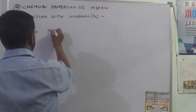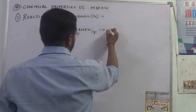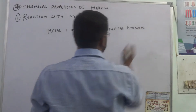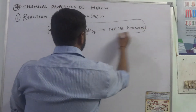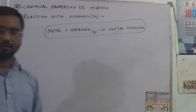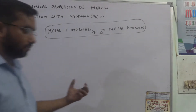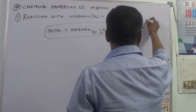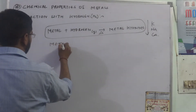When metals react with hydrogen gas, they form metal hydrides. Only a few metals form hydrides, and this requires heating. The highly reactive metals at the top of the reactivity series are the ones that react with hydrogen to form hydrides.